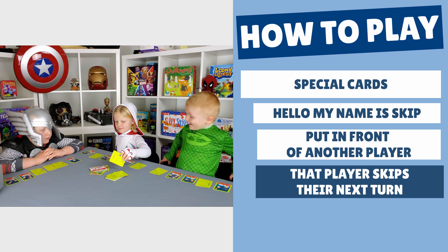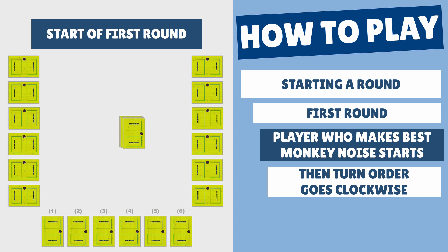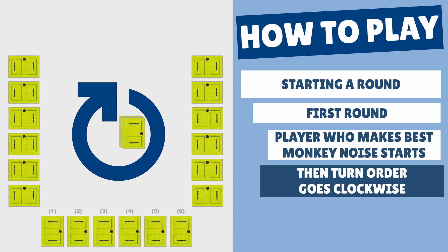The player who can make the best monkey noise gets to start the game. Then take turns going clockwise around the table. Draw and play cards until a player has all of their cards face up. That player is the winner of the round.